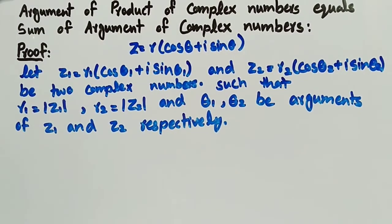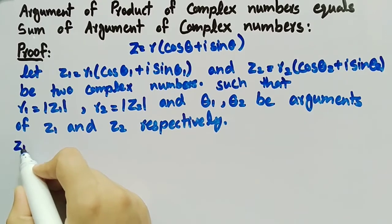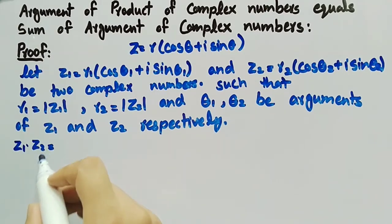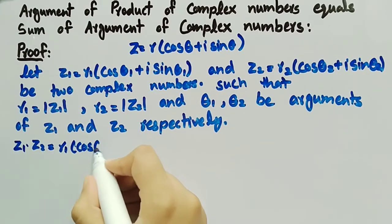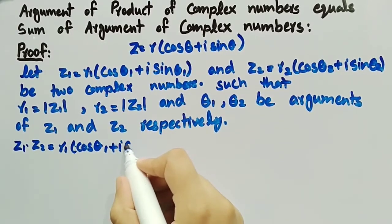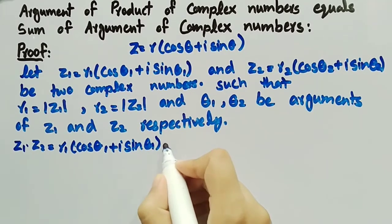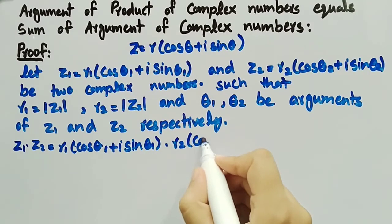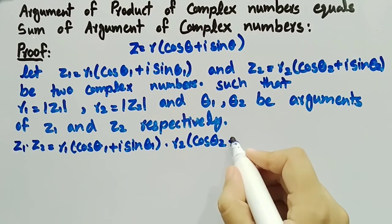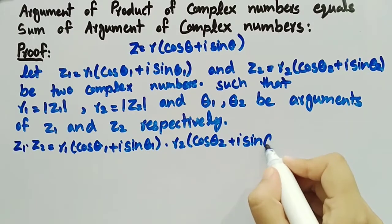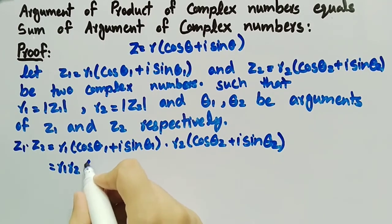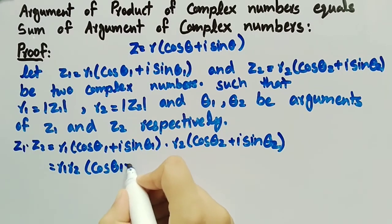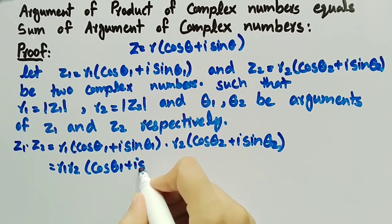Now, taking the product of z1 and z2, we get z1·z2 = r1(cos θ1 + i·sin θ1) multiplied by r2(cos θ2 + i·sin θ2), which gives us r1·r2(cos θ1 + i·sin θ1)(cos θ2 + i·sin θ2).